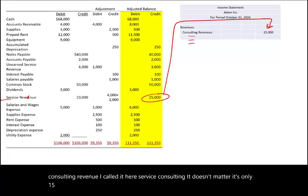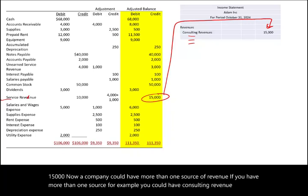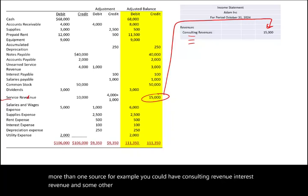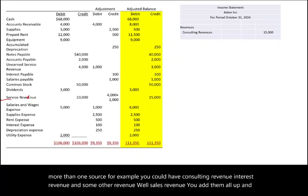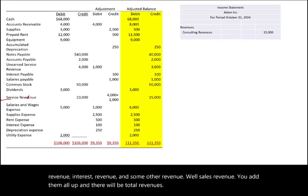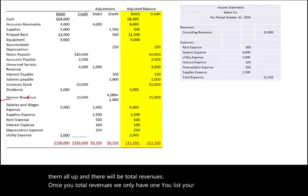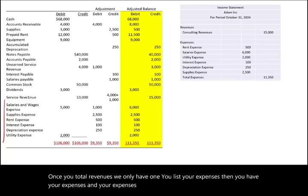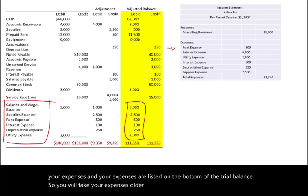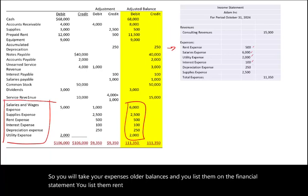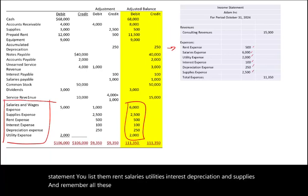A company could have more than one source of revenue — for example, consulting revenue, interest revenue, and sales revenue. You add them all up and that will be total revenues. Once you total the revenues, you list your expenses. Expenses are listed at the bottom of the trial balance. You take those balances and list them on the financial statement: rent, salaries, utilities, interest, depreciation, and supplies. Remember, all these figures were created in the prior two sessions starting from nothing.